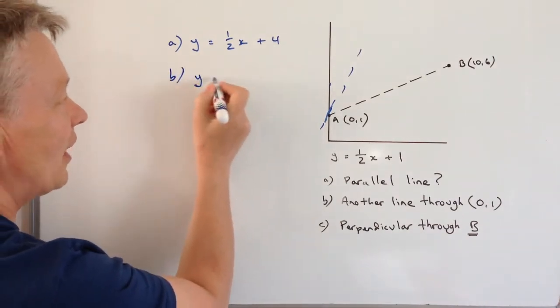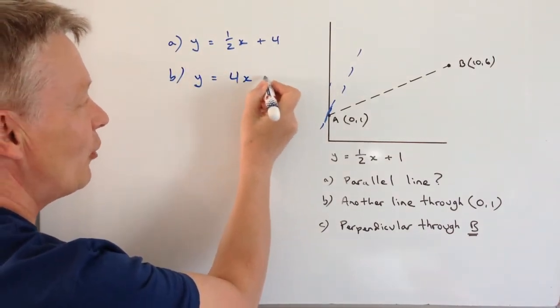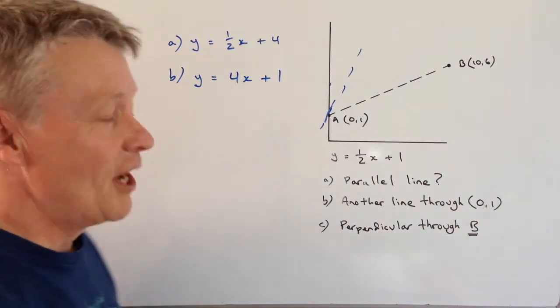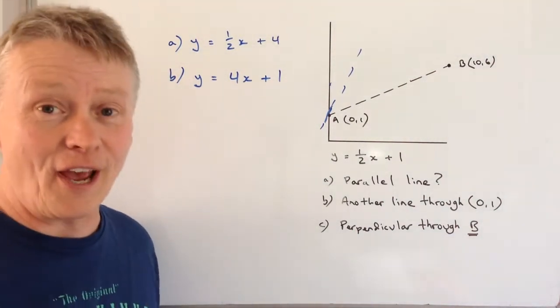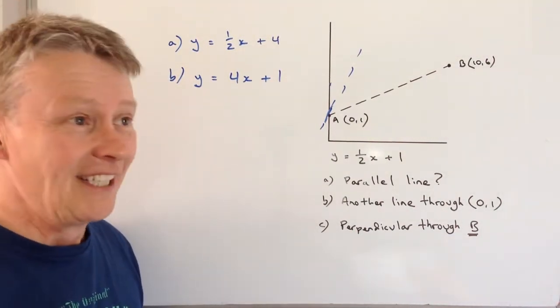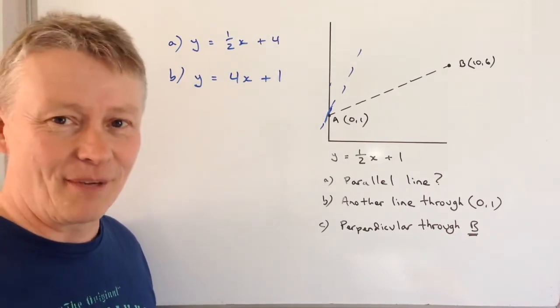So in answer to b we could say y equals four x plus one or it could be two-thirds of x plus one or six x plus one. It doesn't really matter.